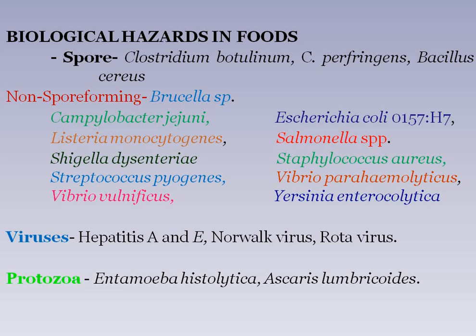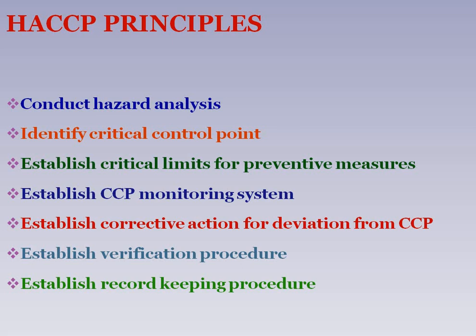Protozoa also act as biological hazards and can contaminate food material, such as Entamoeba histolytica. There are seven HACCP principles: conduct hazard analysis, identify critical control points, establish critical limits for preventive measures, establish a CCP monitoring system, establish corrective actions for deviation from CCPs, establish verification procedures, and establish a record-keeping procedure.